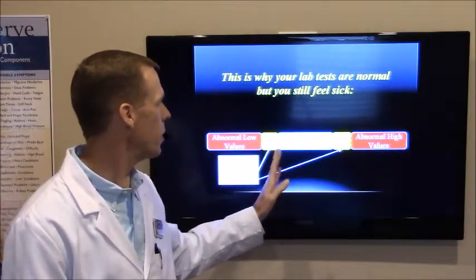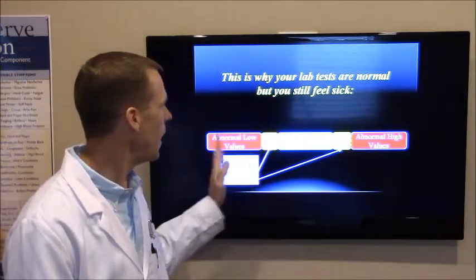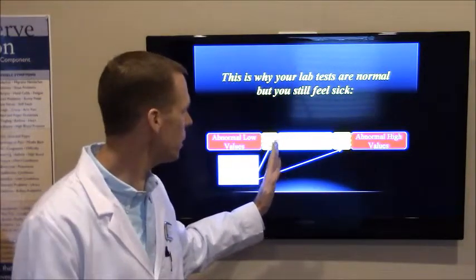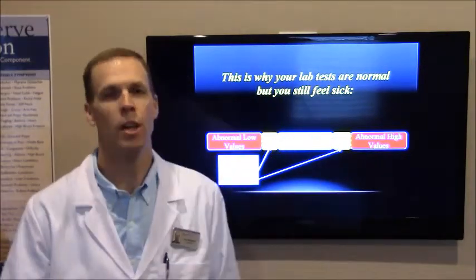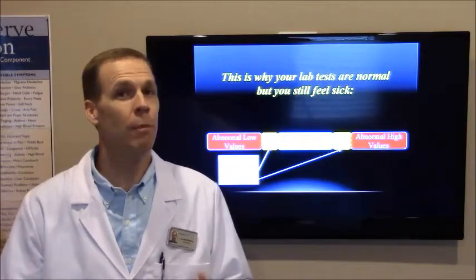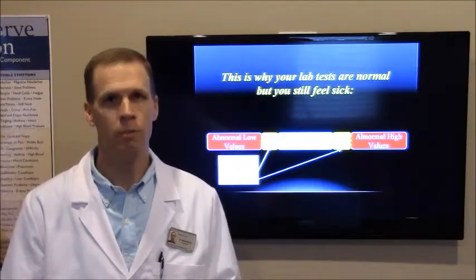We're looking at functional lab ranges. So instead of having high and low be here and here, we're tightening it up and saying actual perfect ranges are going to be from this range to that range. And when we start to look at it that way, we can really start to see why somebody's labs can be quote unquote normal and they feel awful.